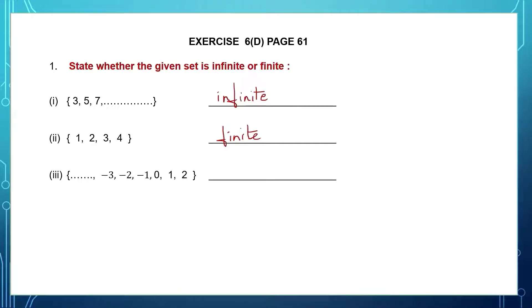Question 3: you can see the dots here in the beginning and then we have a few integers. That means before minus 3, there are many numbers, many more, and the dots indicate that it goes on endlessly — an unlimited number of elements that cannot be counted. Such a set is said to be an infinite set.